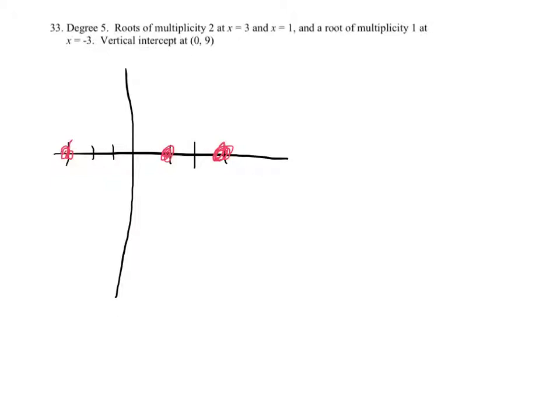Now, the degree is 5, so that tells me that the ending behavior is either going to be like that or coming down. Let's see, it'll be like that and like that. You know, the wiggle's going on here.